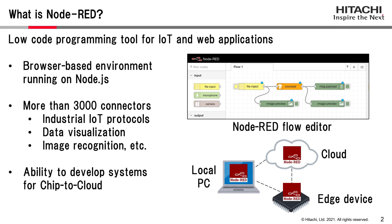This slide introduces Node-RED. Node-RED is a low-code programming tool for IoT and web applications. It is a browser-based environment running on Node.js, and more than 3,000 connectors exist in the Node-RED community. For example, there are connectors for industrial IoT protocols, data visualization, and image recognition. Node-RED can develop systems from chip to cloud, so you can select the environments which you need.